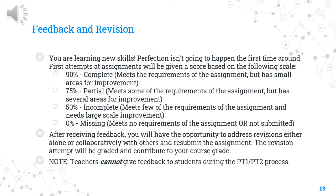Remember, you're learning new skills, so nothing you do is going to be perfect the first time around. Your first attempts will receive feedback on a scale: 90 means complete — it meets the requirements of the assignment but always has areas for improvement; 75 means partially meeting requirements; 50 means incomplete — meets some requirements; and a zero means it's missing or didn't meet any requirements. You'll receive feedback and have the opportunity to address revisions alone or collaboratively and resubmit. The revision attempt will be graded and contribute to your course grade. It's important to note: teachers cannot give feedback on the actual PT1 or PT2 process — this feedback is likely to come from your peers.